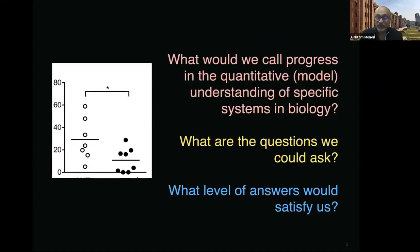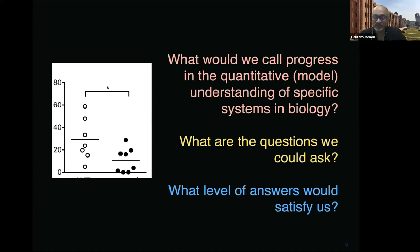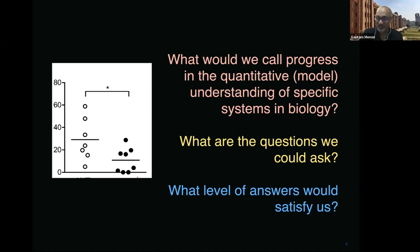So the problem is stated: cells are generically soft matter, processing information out of equilibrium, confined in various ways. What would you consider to be progress in the quantitative modeling of specific biological systems? Even before we get there, one should ask what questions you should be asking and what level of answer would actually satisfy you. Given any system, there are many questions you can ask, and most would be unanswerable within specific modeling contexts. One must match the model to the questions and understand clearly what sort of answers you wish to get.